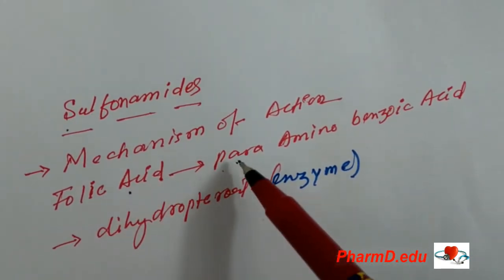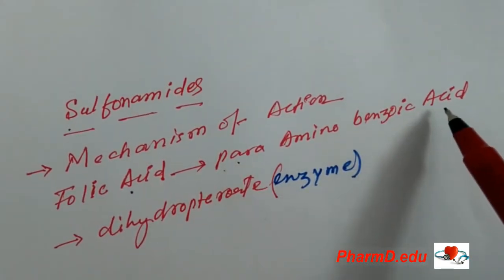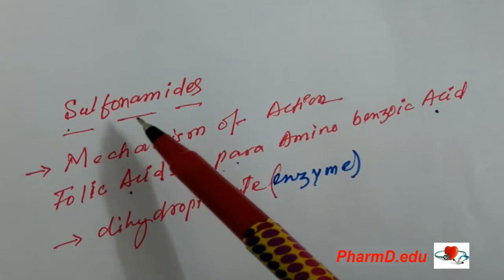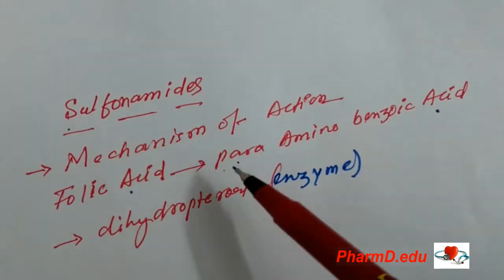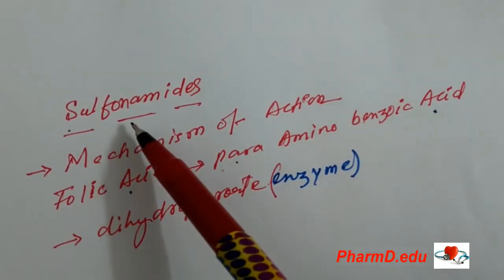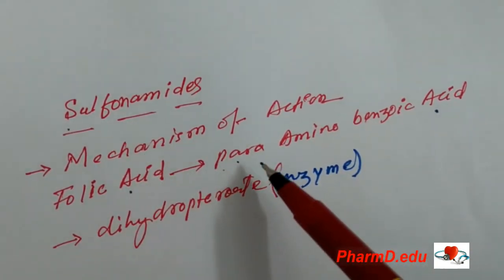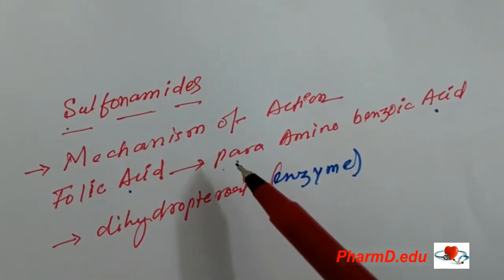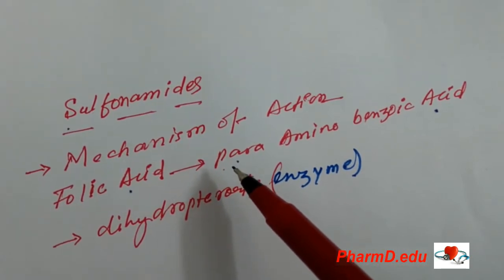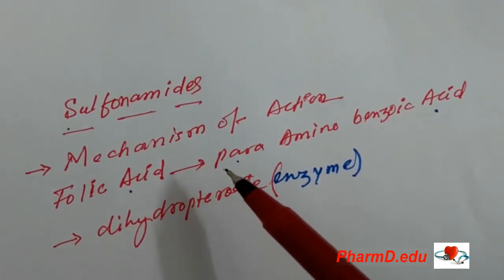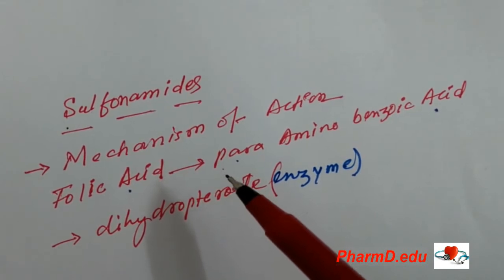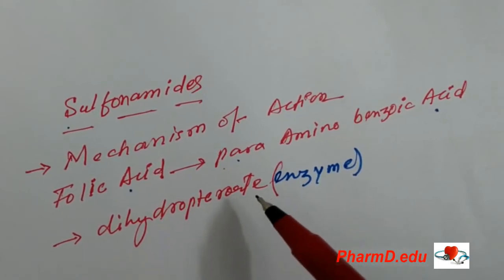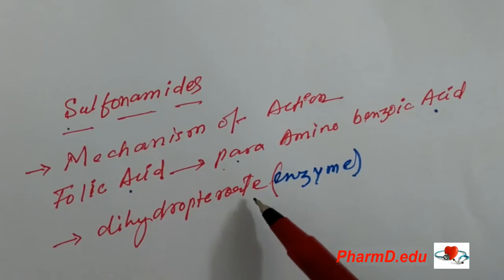Para-aminobenzoic acid has a structural analogue with sulfonamides — that means sulfonamides have a similar structure to para-aminobenzoic acid. As a result of this similar structure, sulfonamides compete with para-aminobenzoic acid in the dihydropteroate synthase pathway for the synthesis of folic acid.